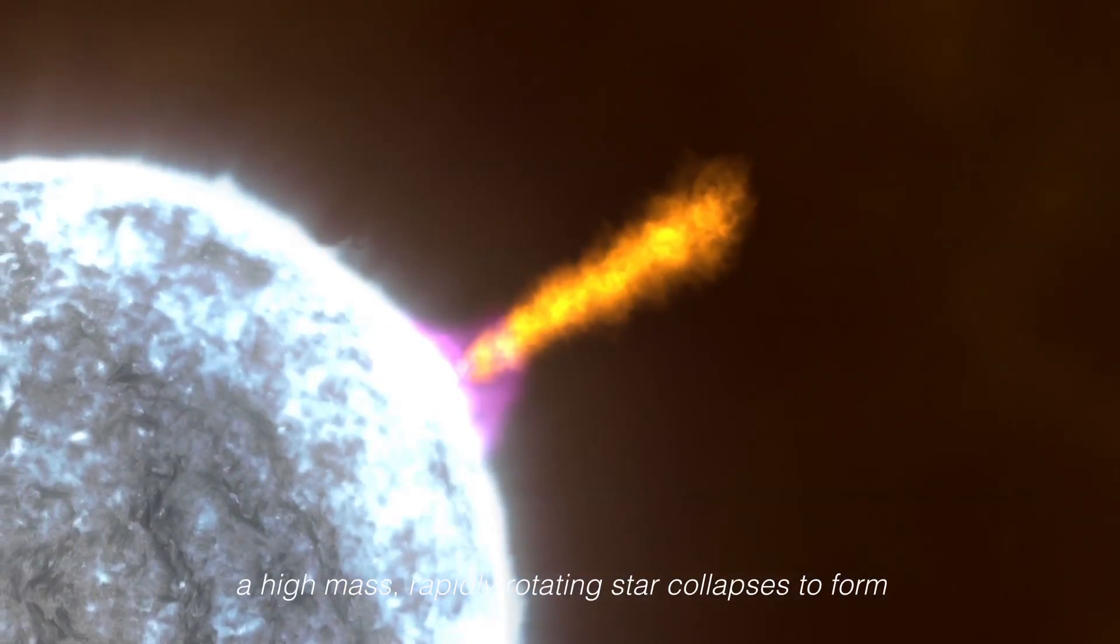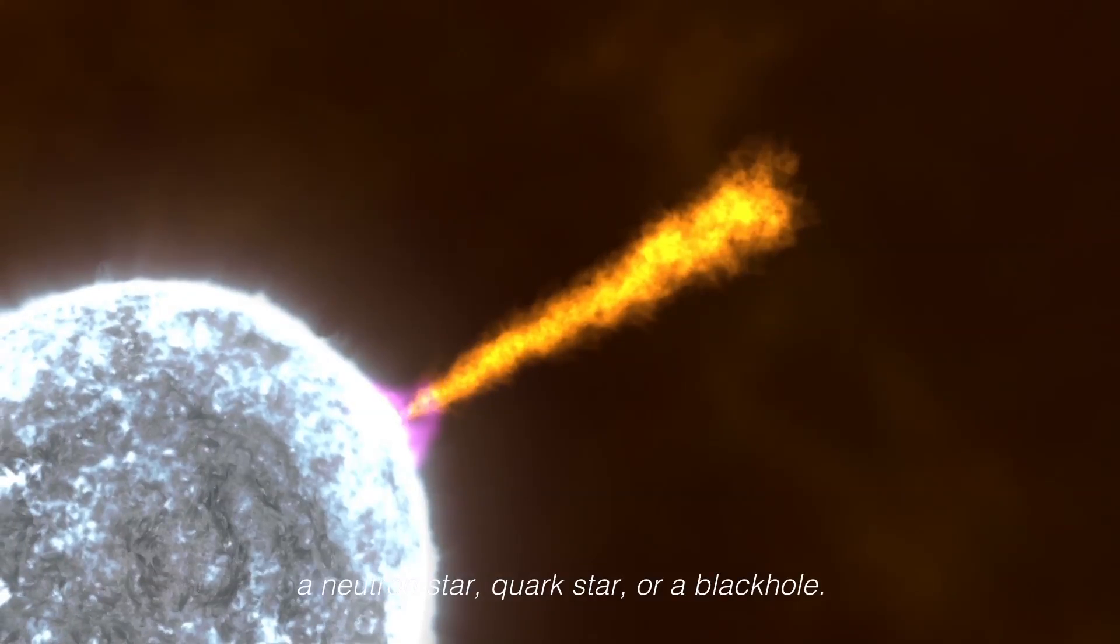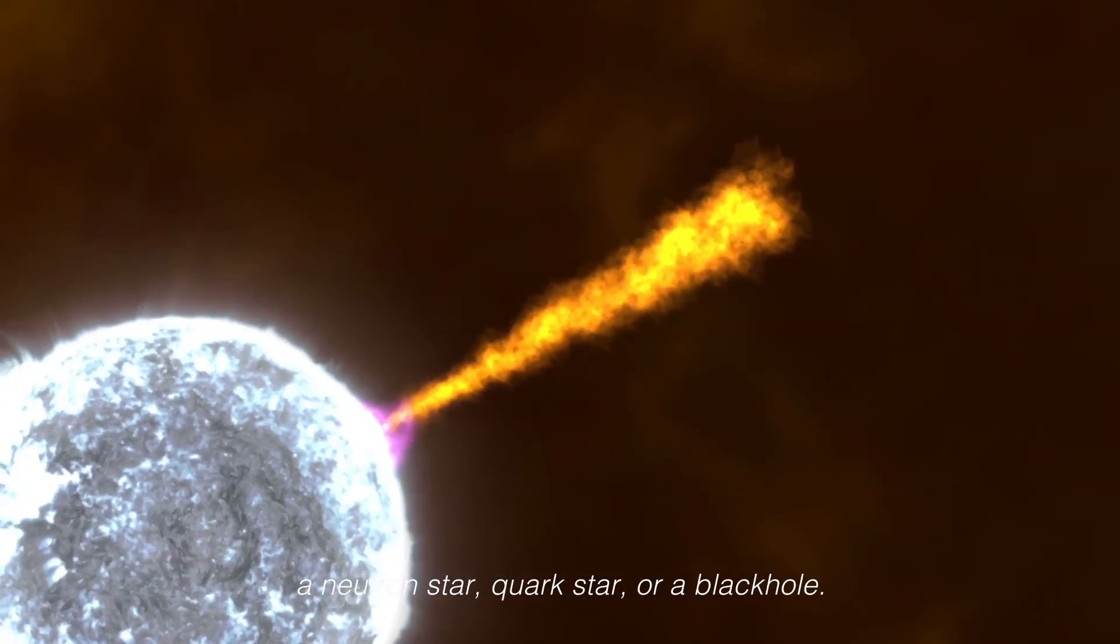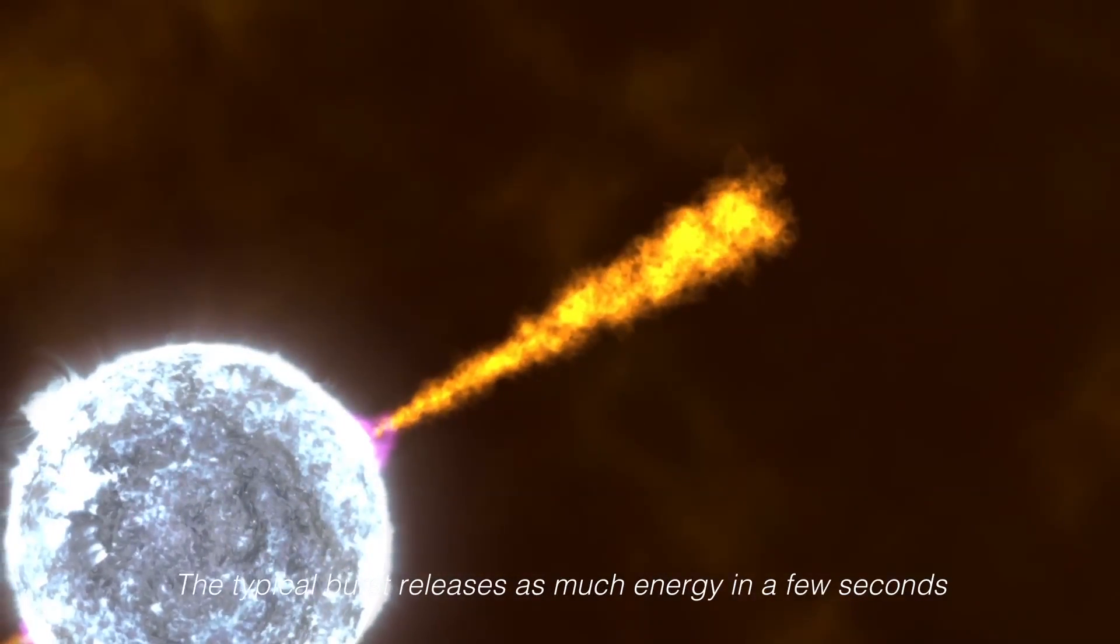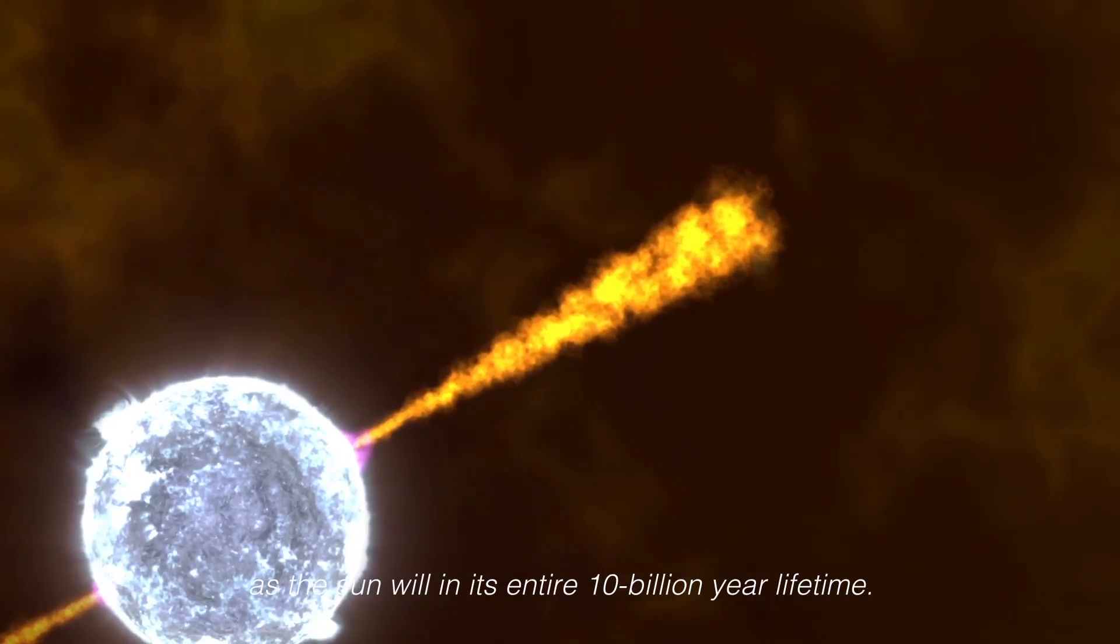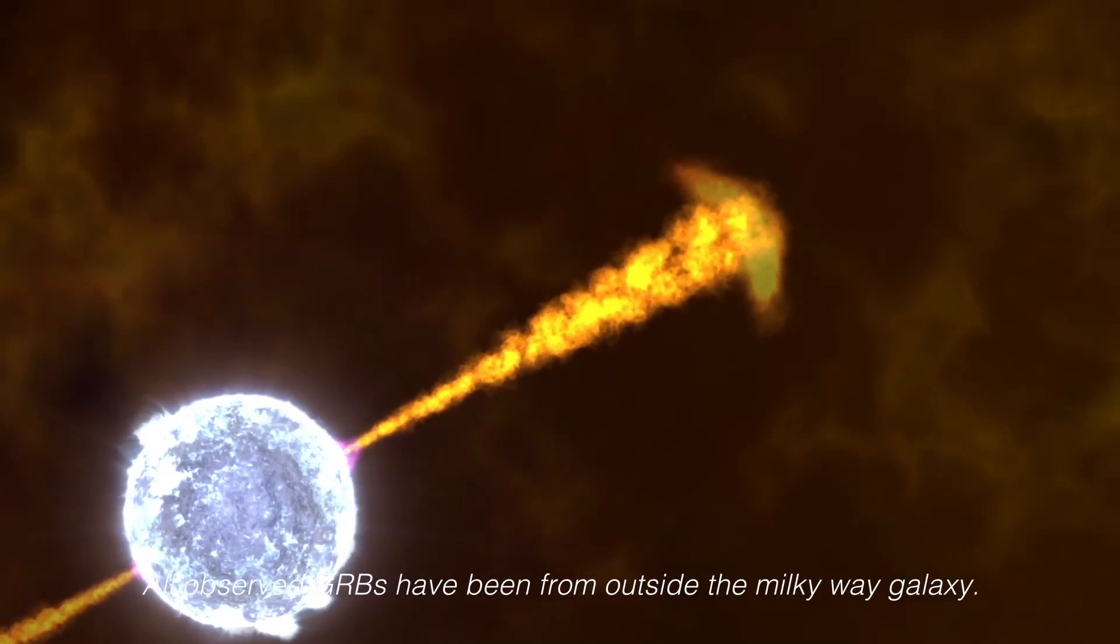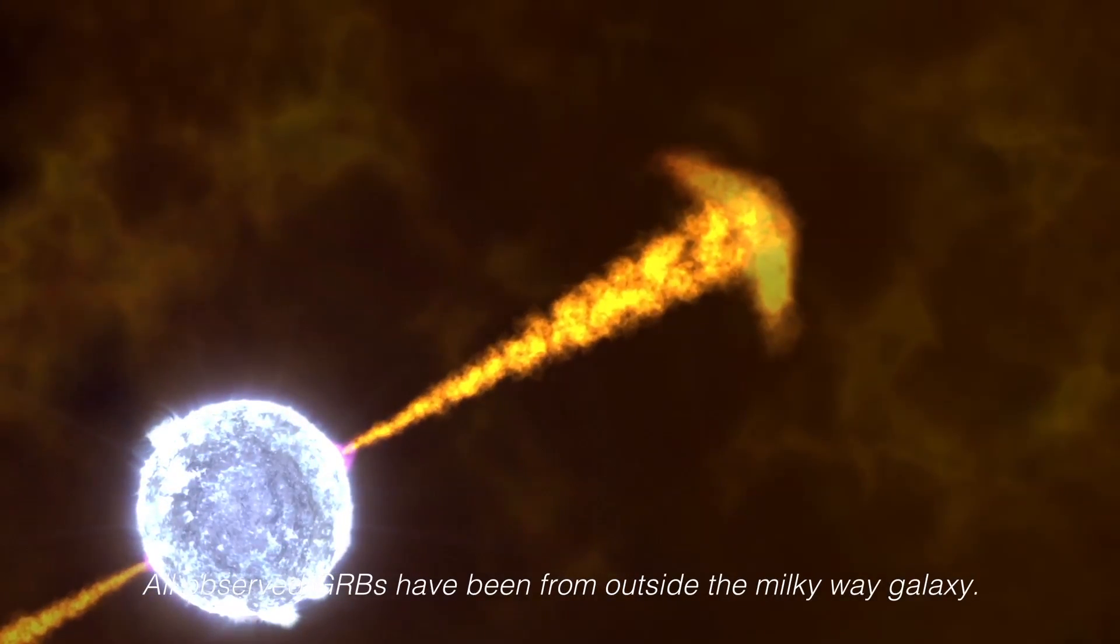A high mass, rapidly rotating star collapses to form a neutron star, quark star, or a black hole. The typical burst releases as much energy in a few seconds as the Sun will in its entire 10 billion year lifetime. All observed GRBs have been from outside the Milky Way galaxy.